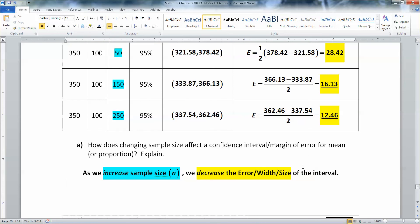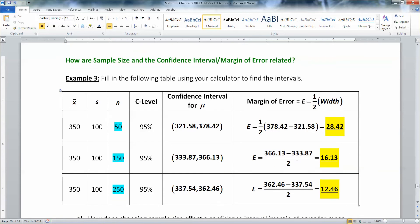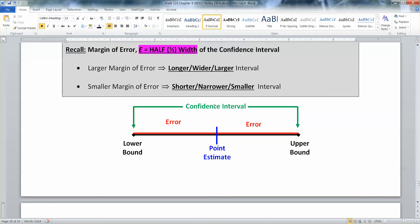We're decreasing the error. And thereby we're also decreasing the size and the width of the interval, right? Because the error remember is half the width. And as one gets smaller, the other gets smaller. They're directly relational right up here. We learned that.